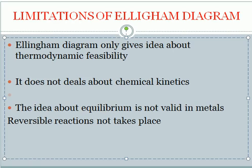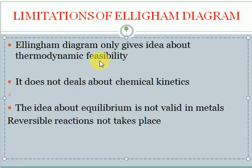Now for the limitations of the Ellingham diagram: it only gives information about whether a chemical reaction is thermodynamically feasible — it does not discuss chemical kinetics, meaning it doesn't tell us how fast or how slow the reaction will proceed. Also, the diagram is based on chemical equilibrium equations (ΔG = −RT ln K), but metallurgical reactions are generally not equilibrium reactions.